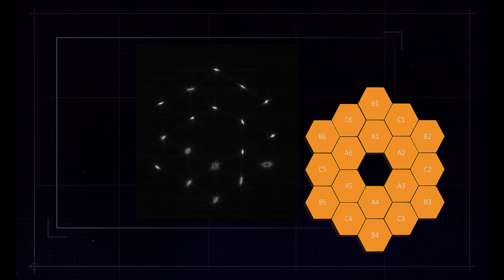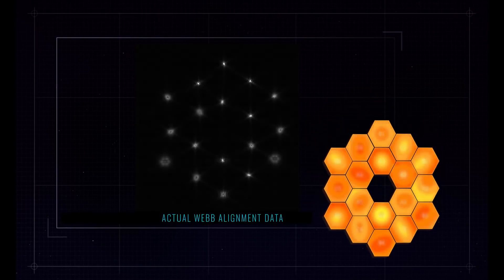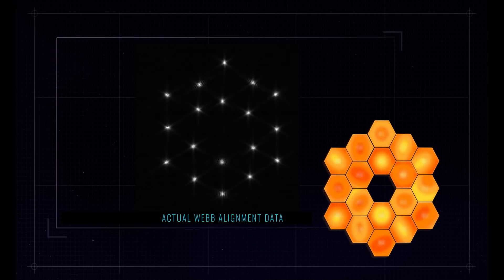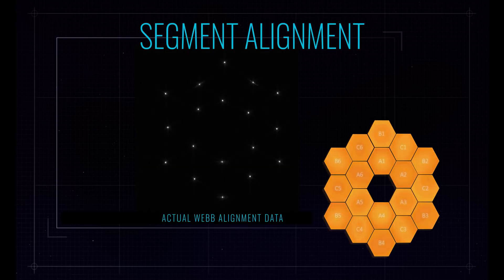And to get there, we went through a process. We did the segment identification, and then we formed the image array. And then once they were in the image array, we used this phase retrieval technology to position each of the mirror segments and the secondary mirror itself such that all the optical aberrations were effectively eliminated.